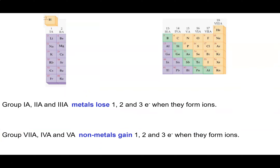To summarize: Group 1A, 2A, and 3A metals love to form +1, +2, and +3 ions, giving them a noble gas configuration. Francium loses one electron and gets the same electron configuration as radon; radium loses two, leaving it with the same configuration as radon; aluminum loses three, leaving it with the neon electron configuration.